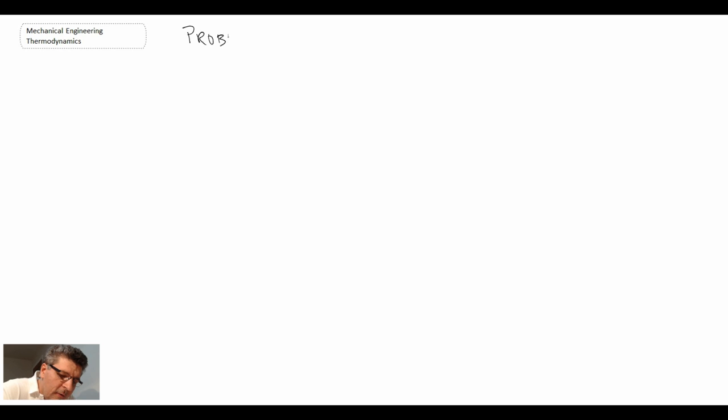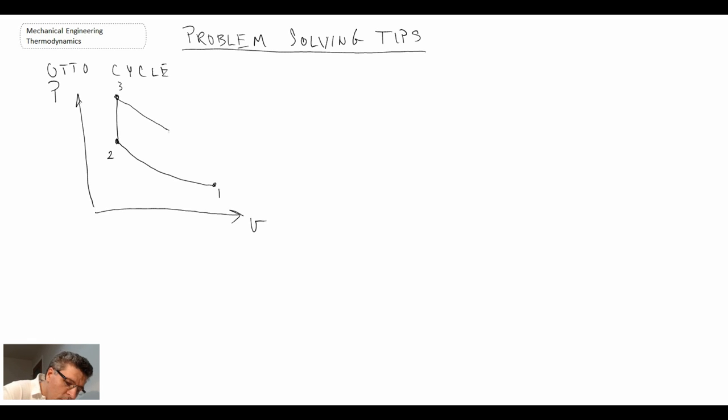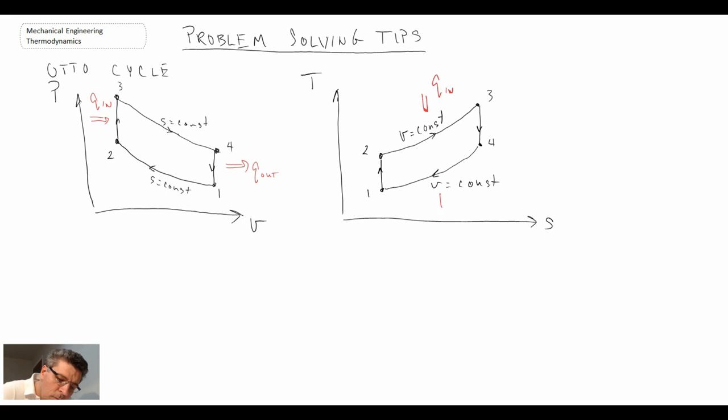So the first one that we will start with is the Otto Cycle. There's the PV as well as the TS diagram for the Otto Cycle. Now typically when you're solving one of these problems you'll have some information.